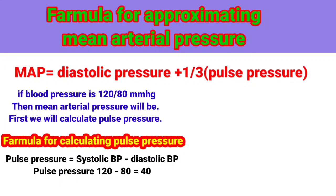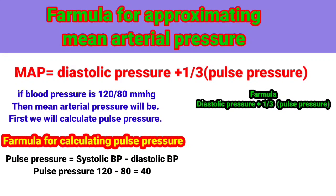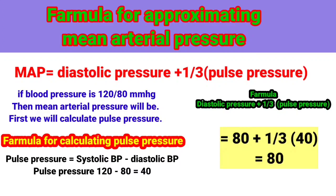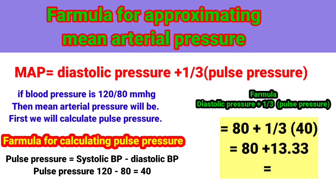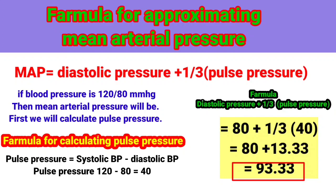Now we calculate Mean Arterial Pressure. MAP equals diastolic pressure plus one-third of pulse pressure. Putting in the values: MAP equals 80 plus one-third of 40, which gives an answer of 93.33. So if we have a BP of 120 by 80, the Mean Arterial Pressure will be 93.33 mmHg.